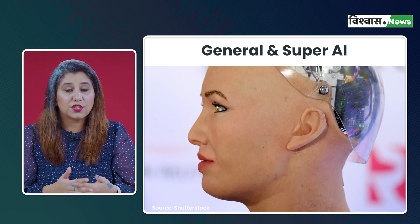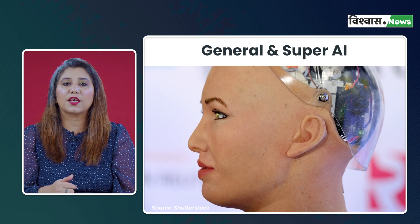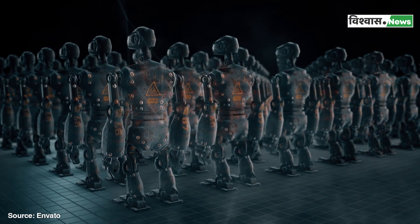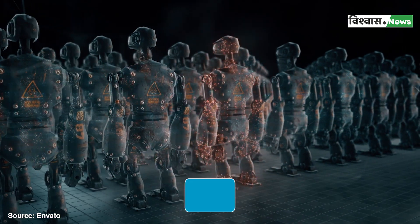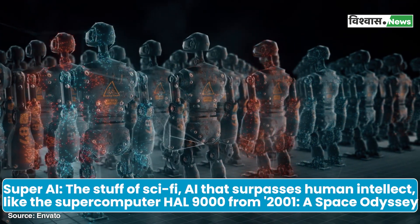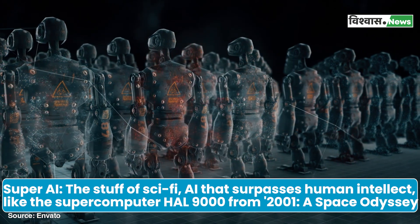Sophia does not possess consciousness or self-awareness like humans do. These intelligent machines may learn new skills just as easily as you can — they can teach, learn, create and adapt, all with the grace and intelligence of a human being. However, as of now, we are still working on achieving this level of intelligence in machines. The most advanced AI systems we have today are still narrow AI systems. There is still a lot of research needed before we can achieve AGI or ASI.